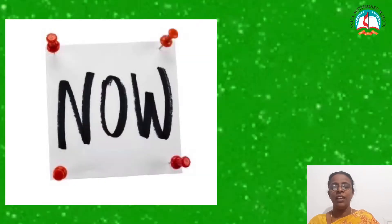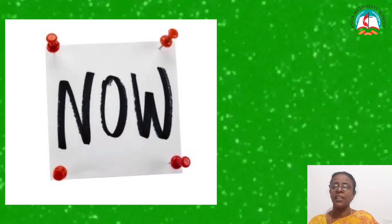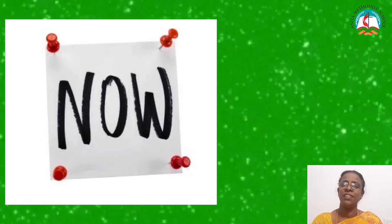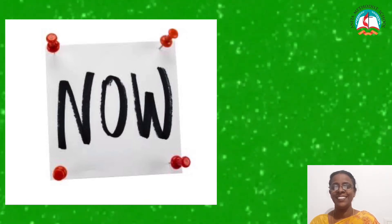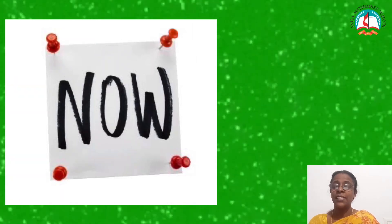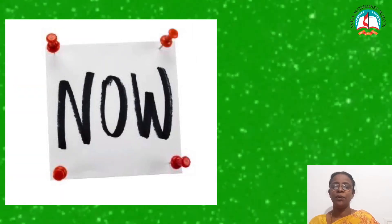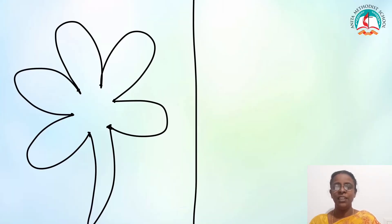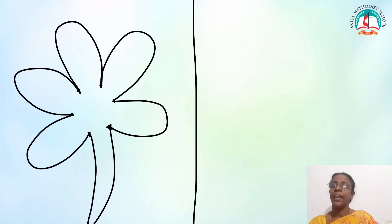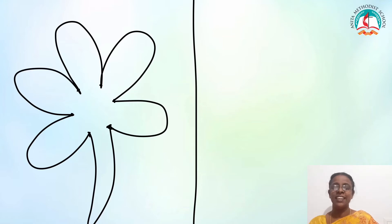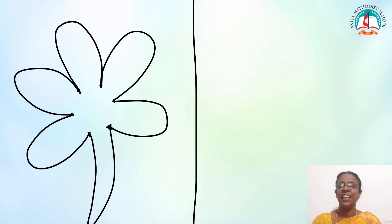Now we will try out negative space art with another flower. As I said before, draw a flower. In the previous one, we colored inside the flower. Now we are going to color around the flower like this.